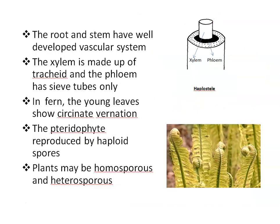The roots and stem have a well-developed vascular system composed of xylem and phloem. The xylem is made up of tracheids only, and phloem has sieve tubes only. In general, xylem is made up of four types of cells: tracheids, xylem vessels, xylem fibers, and xylem parenchyma. Similarly, phloem is made up of sieve tubes, companion cells, phloem parenchyma, and phloem fibers. But in Pteridophytes, xylem is made up of tracheids only and phloem has sieve tubes only.